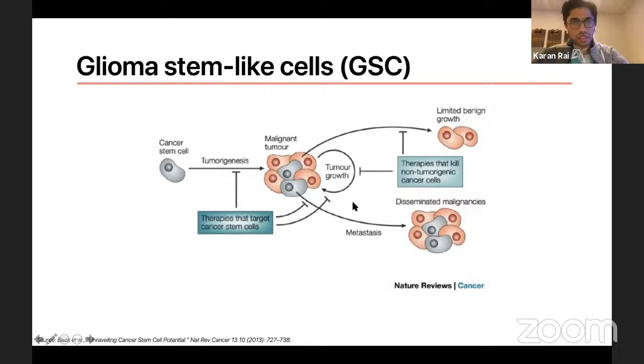So briefly, glioma stem cells or glioma stem-like cells, they kind of fit into this cancer stem cell hypothesis, which posits that this subset of cells within gliomas and cancers in general might be responsible for the highly proliferative properties, invasive and migratory properties of cancers, as well as may play a role into their chemotherapeutic resistance and difficulty to manage medically after, especially after resection.